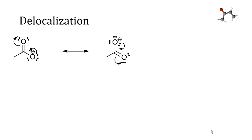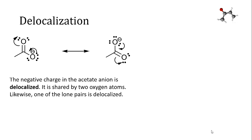Here are two of the resonance structures for the acetate anion. You can see from these two resonance structures that the electrons are being shared between the two oxygen atoms, and specifically the negative charge is being shared between the two oxygen atoms. So we can say that the negative charge in the acetate anion is delocalized — it's being shared by two oxygen atoms, which is one more than we would normally expect if we were looking at either of those structures individually.